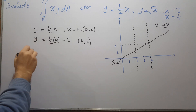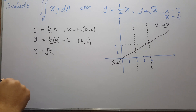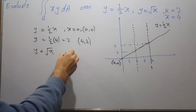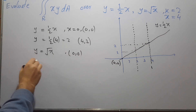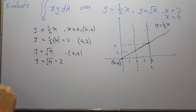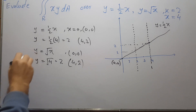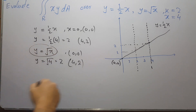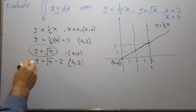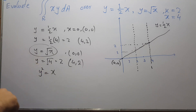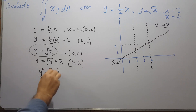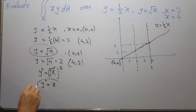The other equation is y equals √x. When x equals 0, y equals 0, so it starts from the origin. If x equals 4, then y equals 2. This is a parabola — if you square both sides, you get x equals y², which is the equation of a parabola.